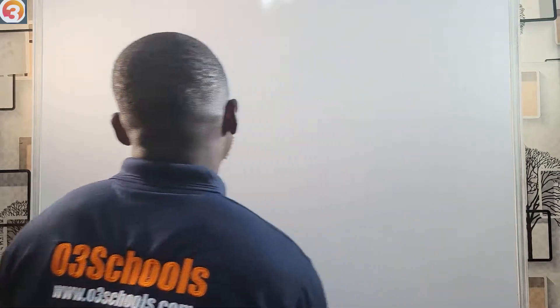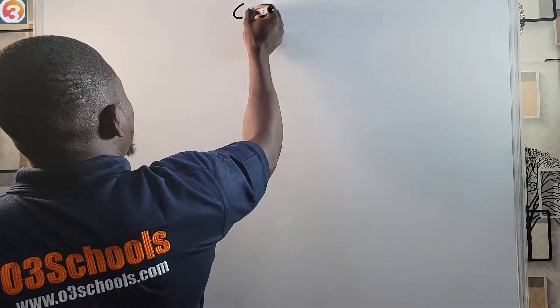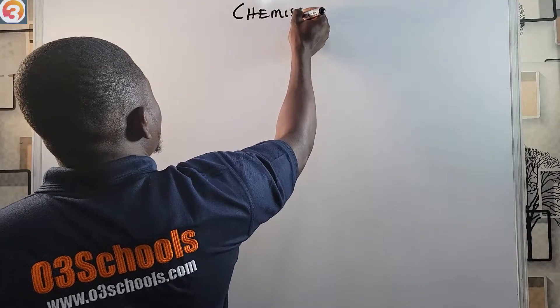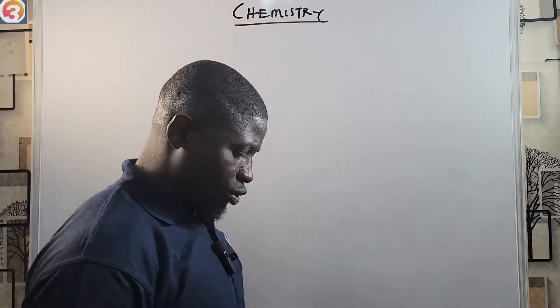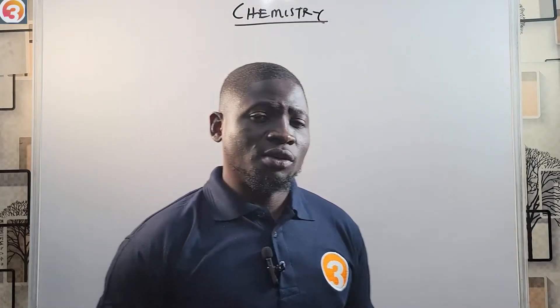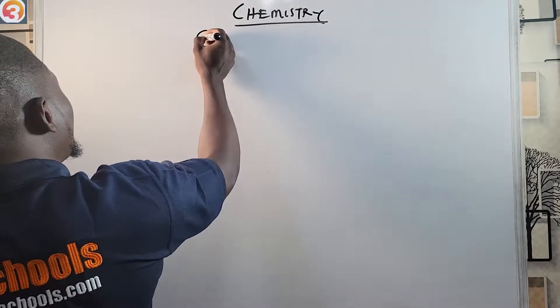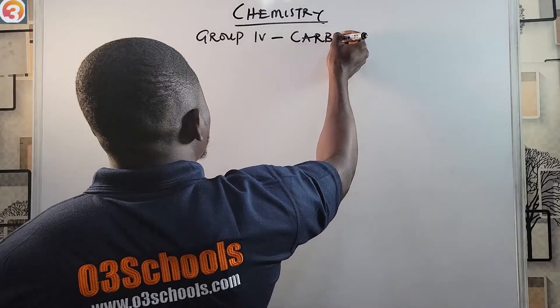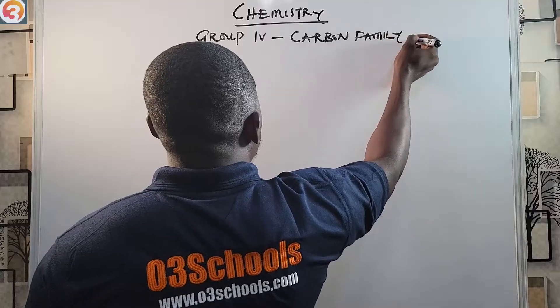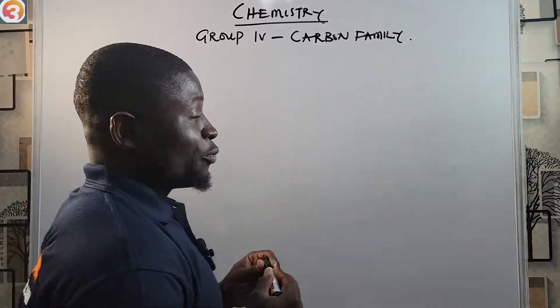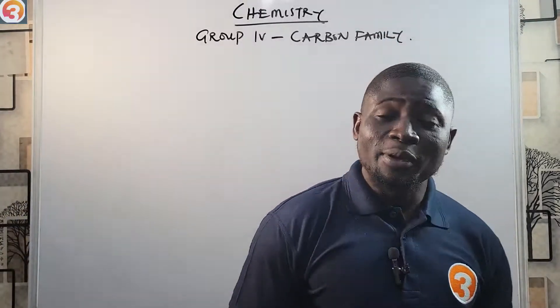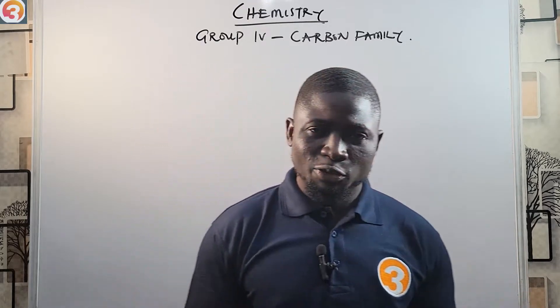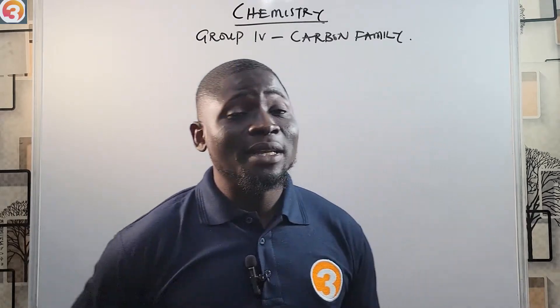Hello guys and welcome back to another episode of chemistry. We are going to continue our study of the periodic table, looking at the families of elements. Today I'm going to be looking at Group 4 elements, now called the carbon family. One of the reasons why we call them the carbon family is because carbon is one of the most important elements in this group, and it is also the first element in the group.